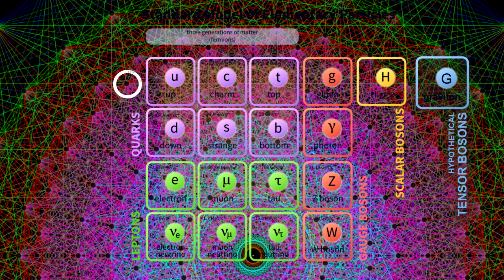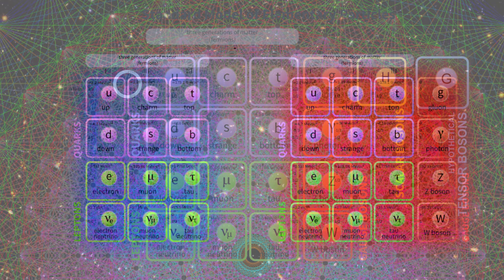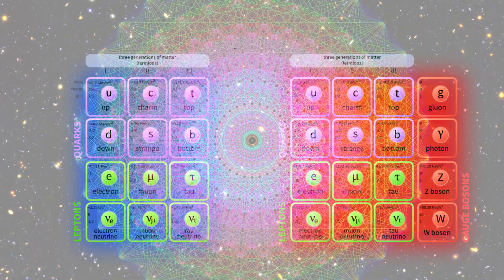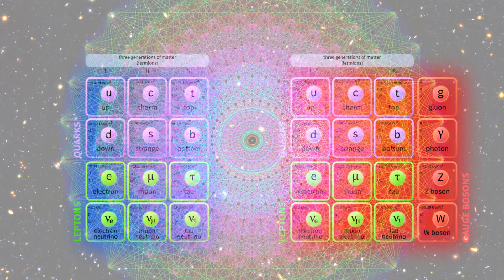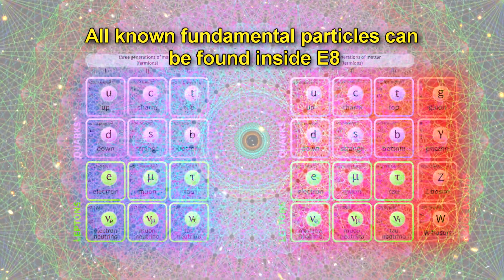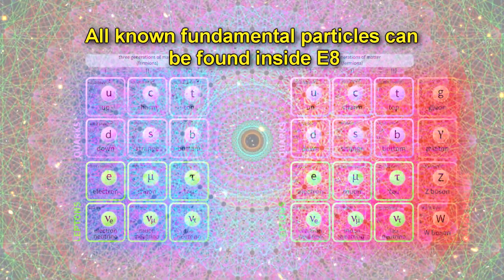Basically, all the normal things we know about — gravity, electromagnetism, weak nuclear force, and strong nuclear force — can be described in terms of algebraic objects. And each of these objects happens to sit inside this complicated E8 structure. Does this mean that E8 represents the framework of the universe, or is it just fancy math made to look as if some of it fits reality?